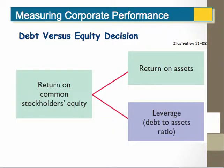So when we make a decision, we have to ask ourselves, if we're going for long-term financing, how is it going to affect our ratios when people analyze how we're doing? Are we concerned about the return on assets or how leveraged the company is — leverage meaning how much we borrow in relationship to the amount of assets we have? Big question: do we borrow with a bond or do we sell additional stock? It all depends upon what we want to do with our corporation.